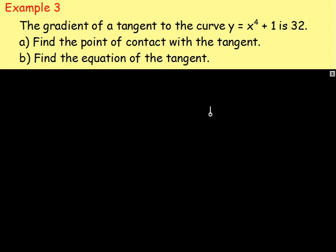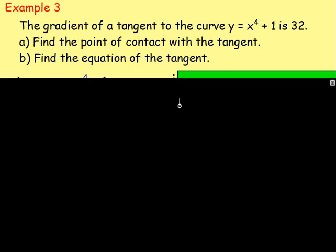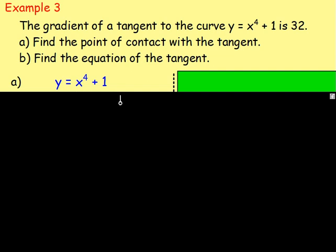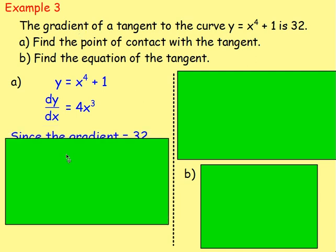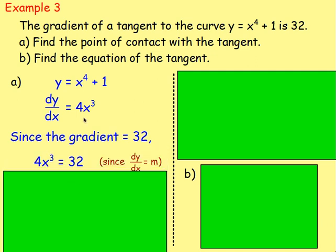One final example. The gradient of a tangent to the curve y equals x to the power of 4 plus 1 is 32. Find the point of contact with the tangent. Here we're not asked to work out the gradient — it tells us the gradient is 32. We need to work out x and y. We're given y equals x to the power of 4 plus 1. We know the gradient is dy by dx, so let's differentiate: dy by dx equals 4x cubed. Since the gradient is 32, we can say 4x cubed equals 32.